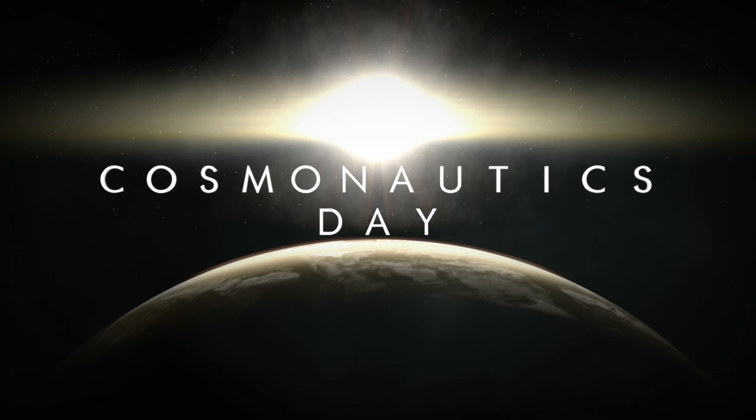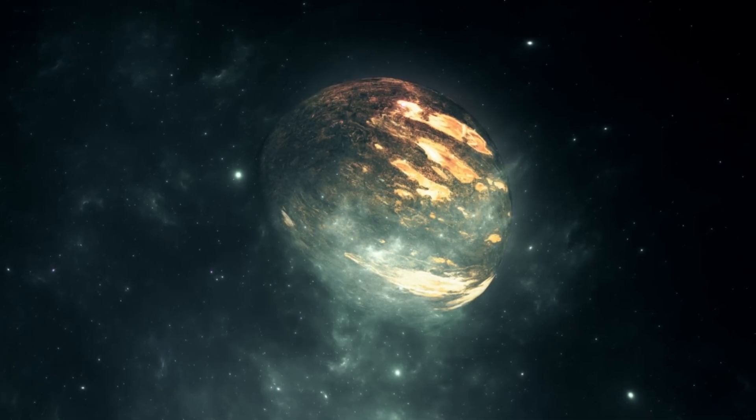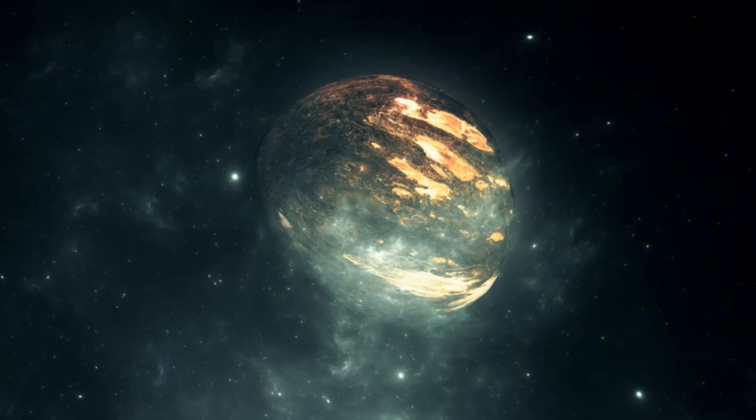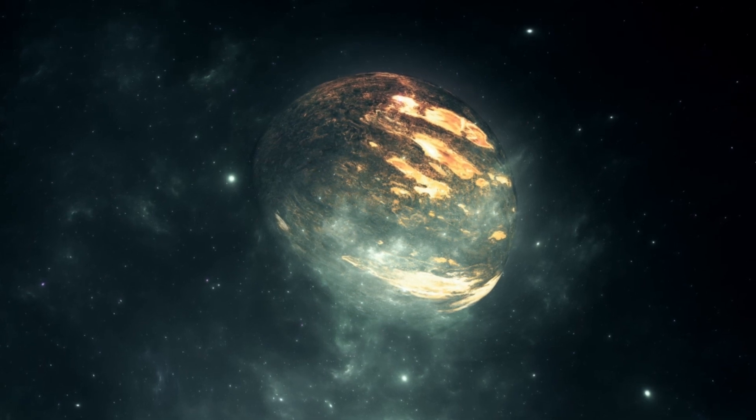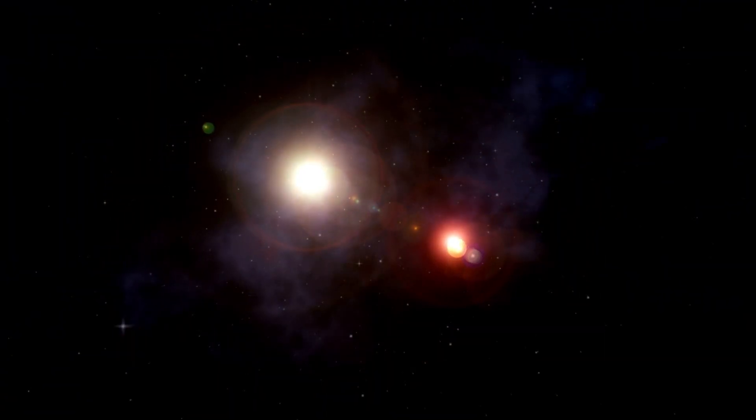For example, Proxima b, the closest exoplanet to Earth, is in the habitable zone of our nearest neighbor, the dwarf star Proxima Centauri, about 4.25 light years away.